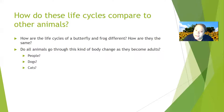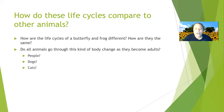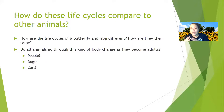Do all animals go through this kind of body change as they become adults? Yes — everything on this earth has a life cycle. For people, we start in the womb as a fetus, then we're a baby, toddler, child, teenager, full-grown adult, then a senior. Dogs come out as puppies, then become young adult dogs, then full-grown adults. Cats are the same. We all have a life cycle.